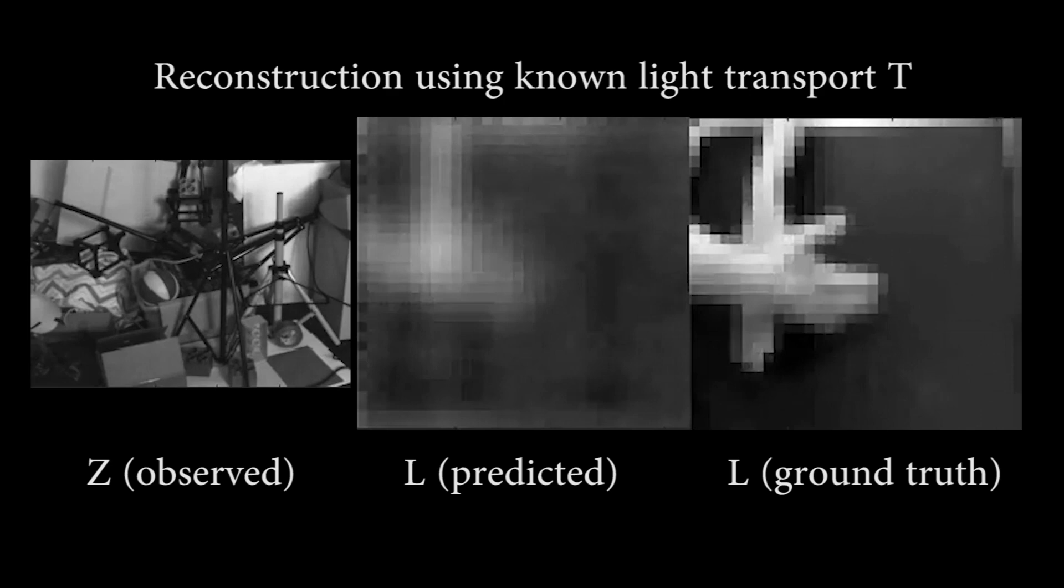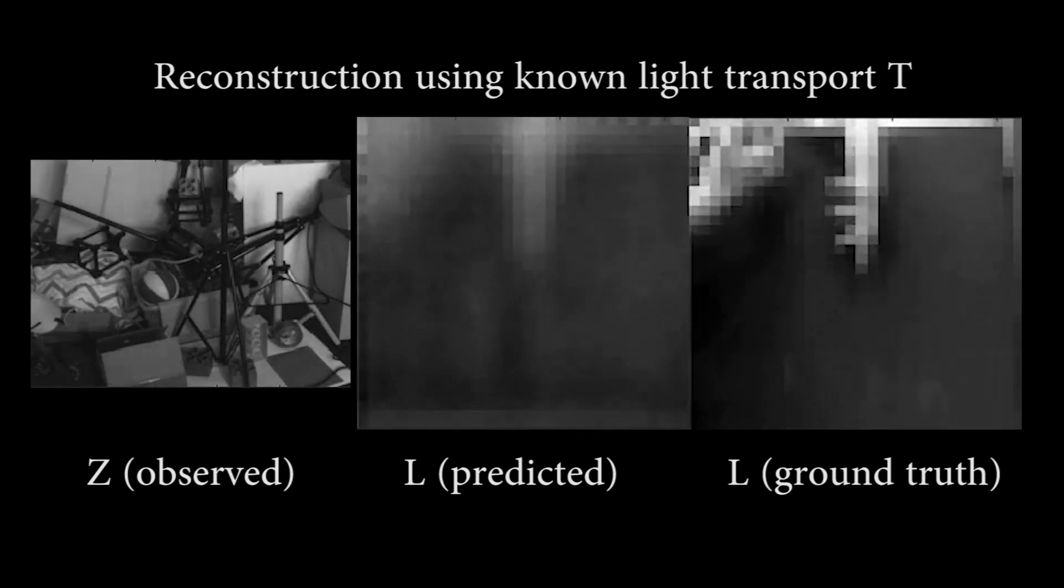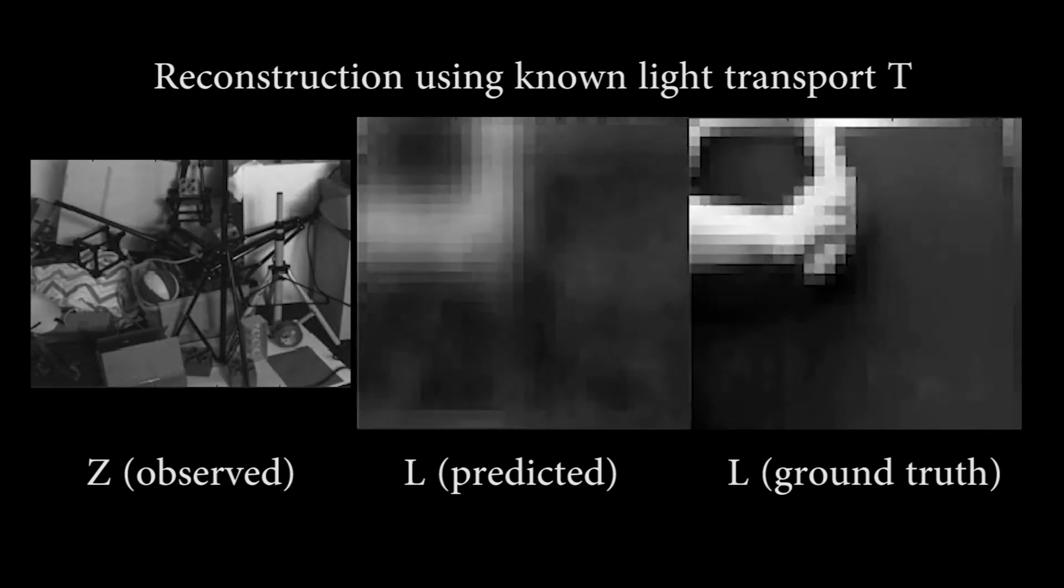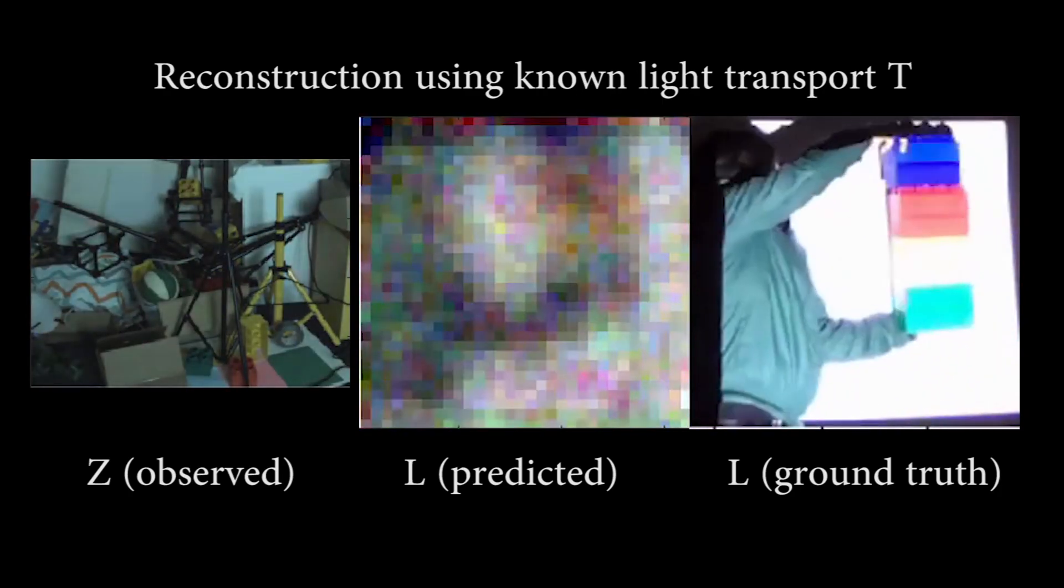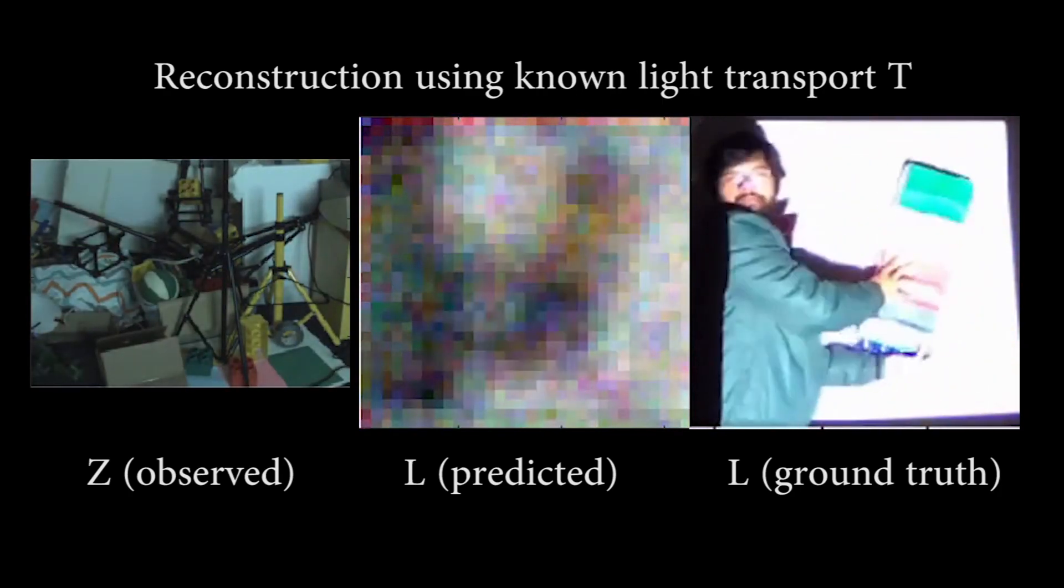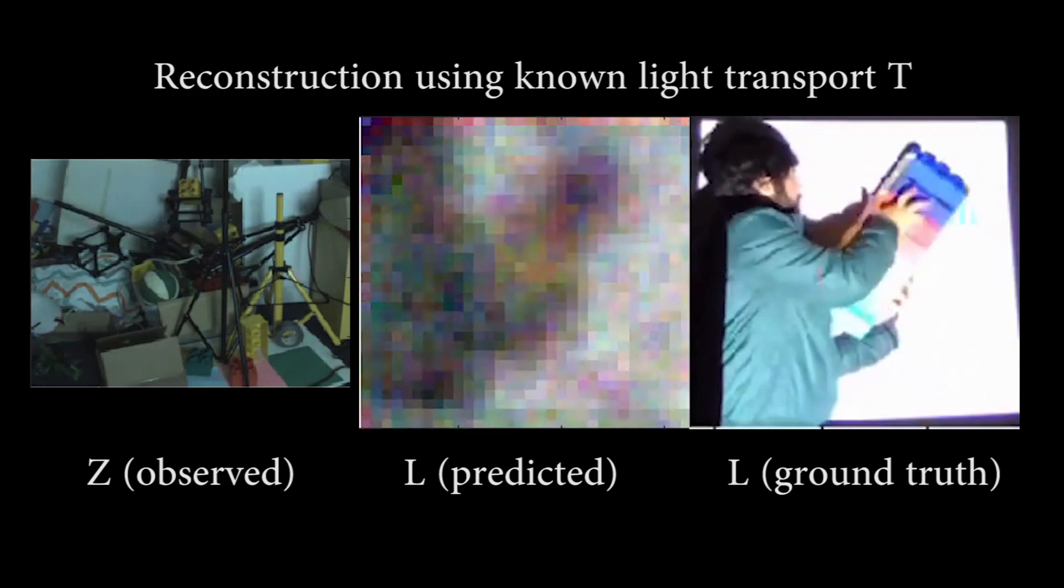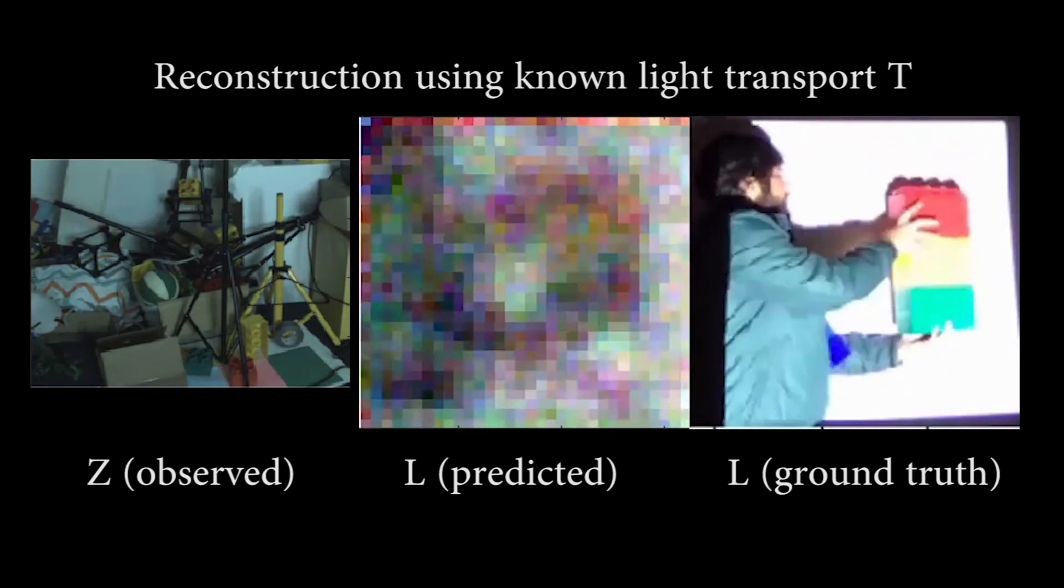Here we show the results we obtain when the light transport tensor is known. We also successfully reconstruct a live-action sequence where, instead of a pre-recorded video, a person physically moves in front of the projector.